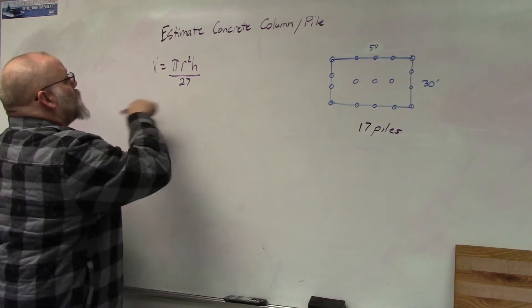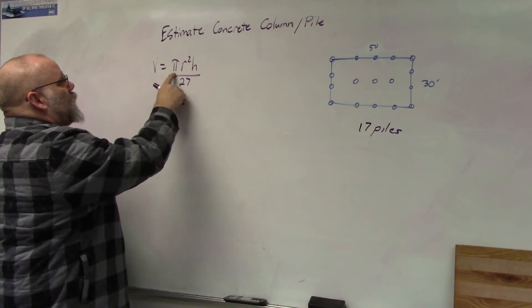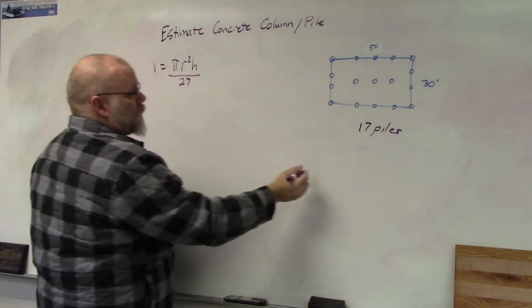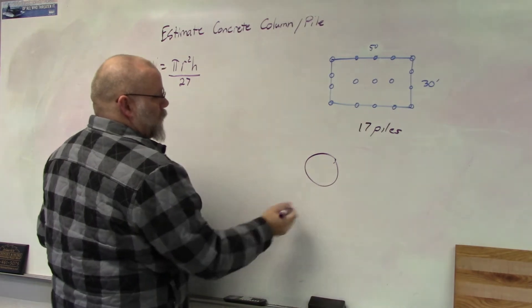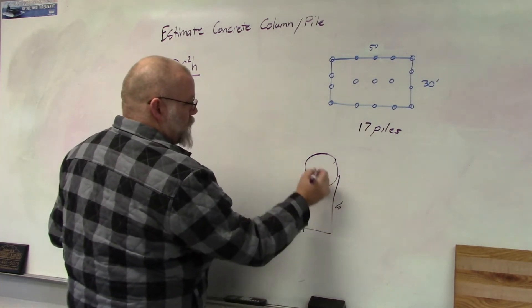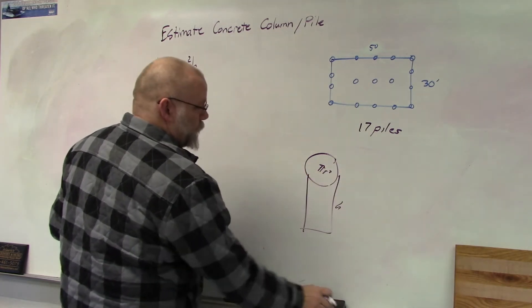So the formula we're going to use is the volume of a cylinder which is π r² h. Pi r squared is the radius or the area of the bottom or the round part and then the h is the depth. So this is h and this is π r².